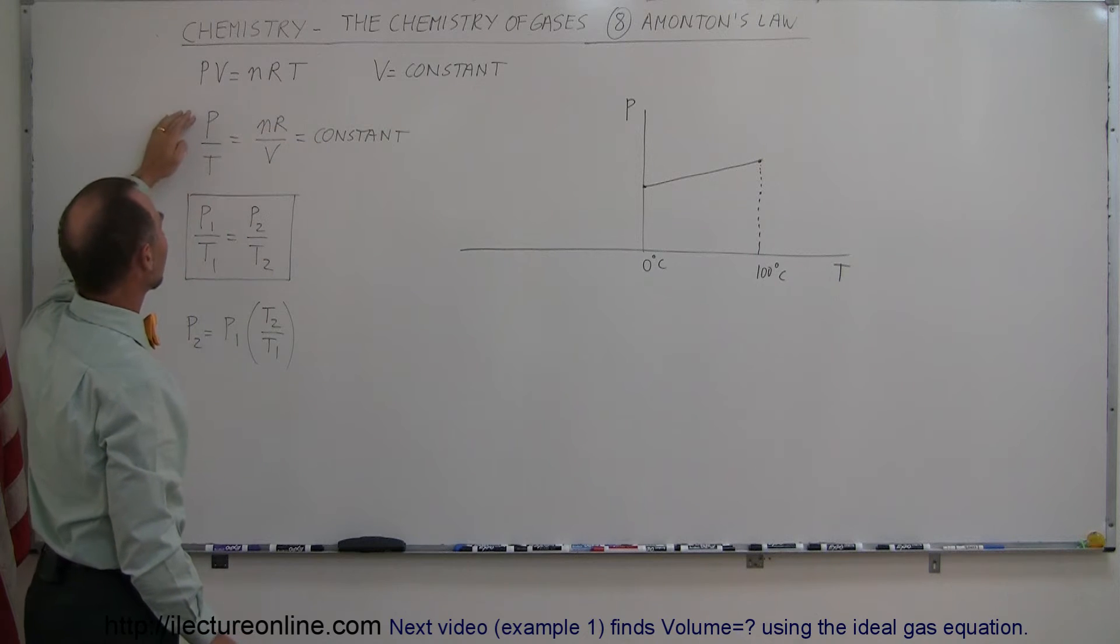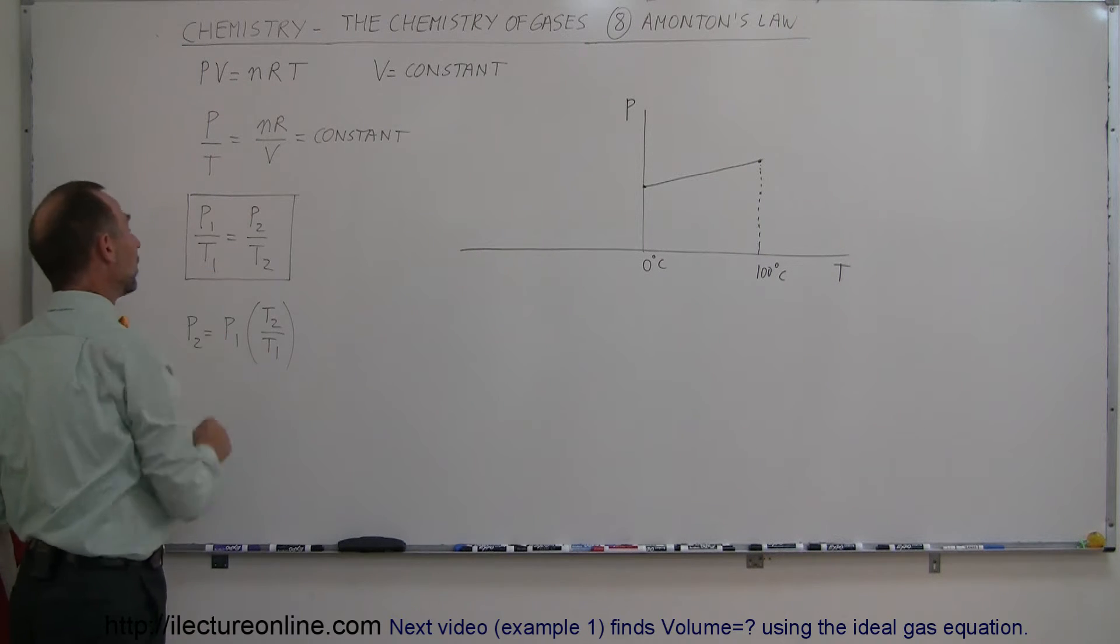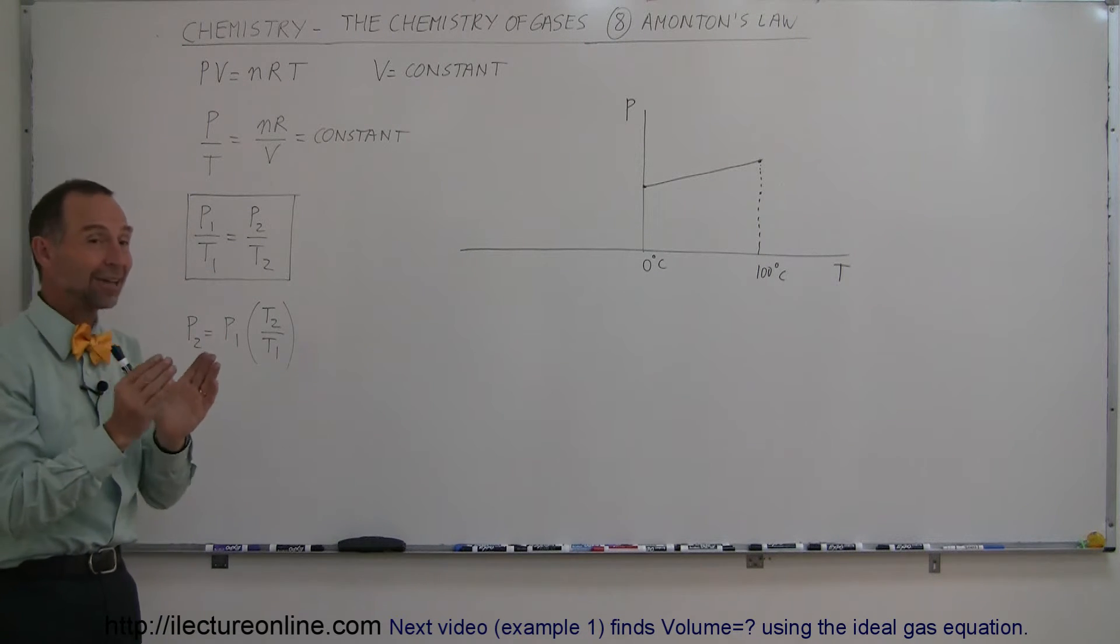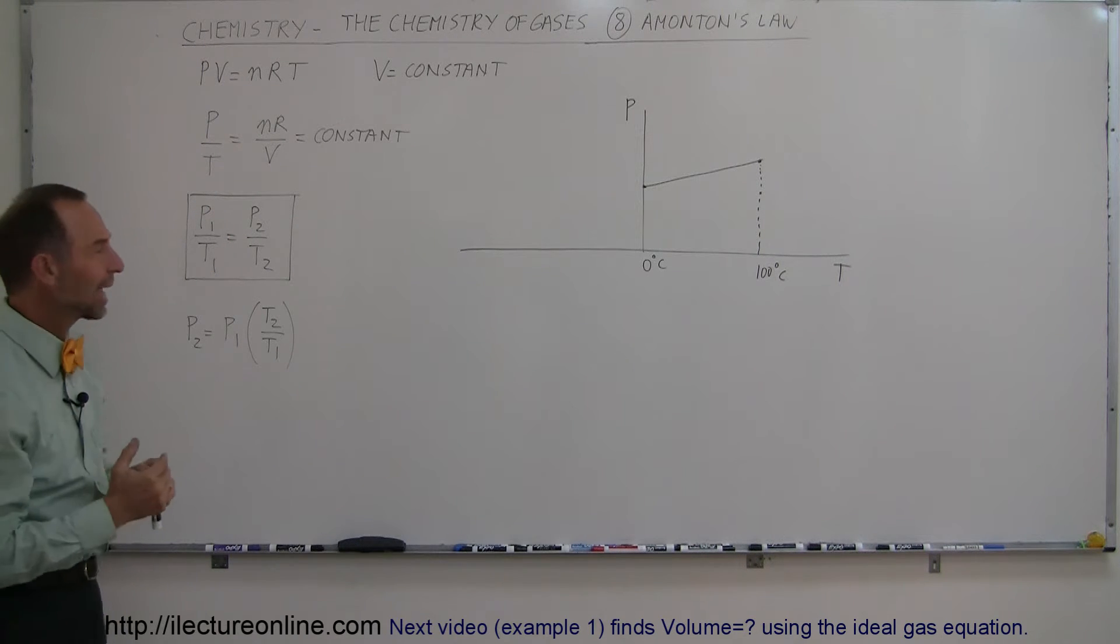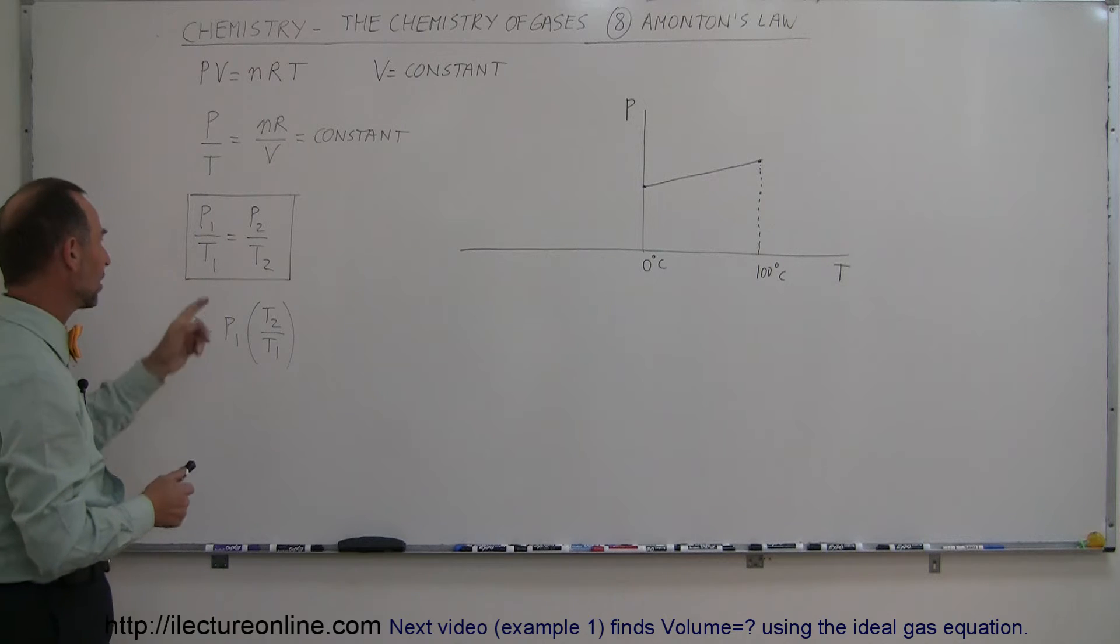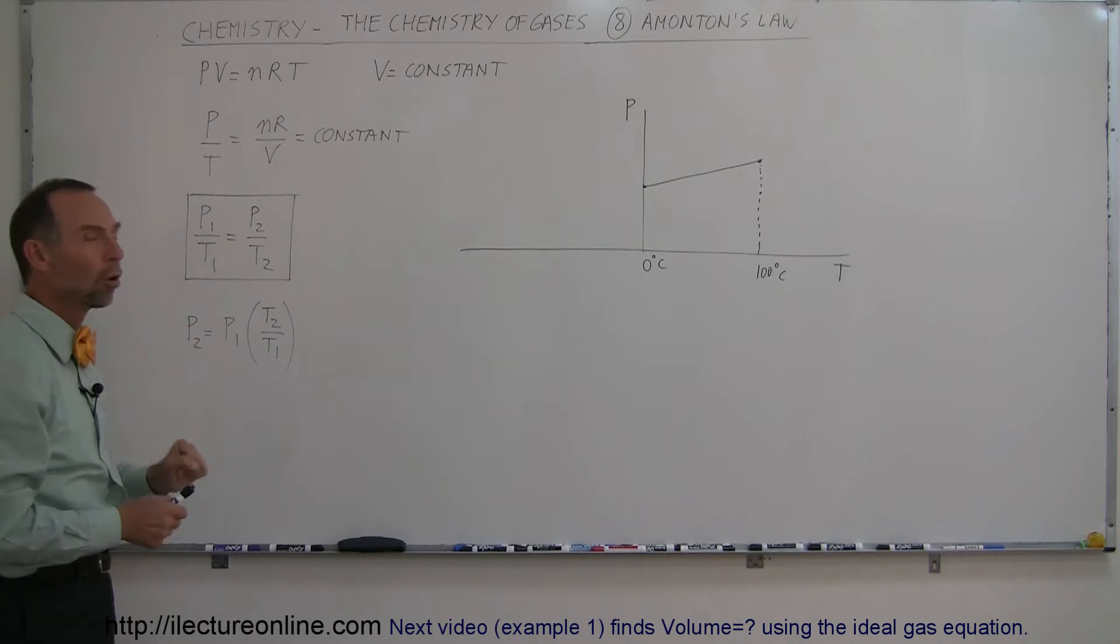Therefore we can write that P over T is always going to be equal to a constant. So we can write that P1/T1, the pressure and temperature of a gas in its initial state, equals the ratio of P2 over T2, the pressure and temperature of the gas in the final state. If we solve that for the final pressure, that is equal to the initial pressure times the ratio of the new temperature over the old temperature.